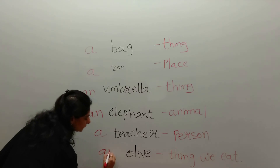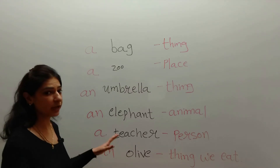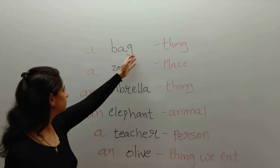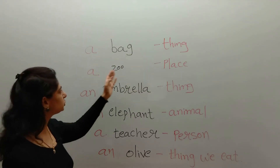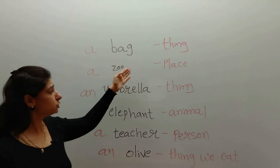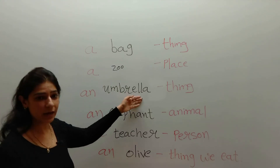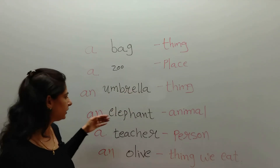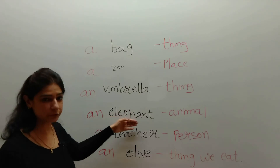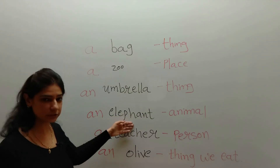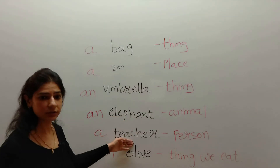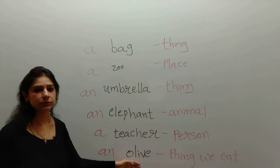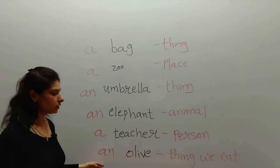Now let's practice together: a bag, a zoo, an umbrella, an elephant, a teacher, an olive.